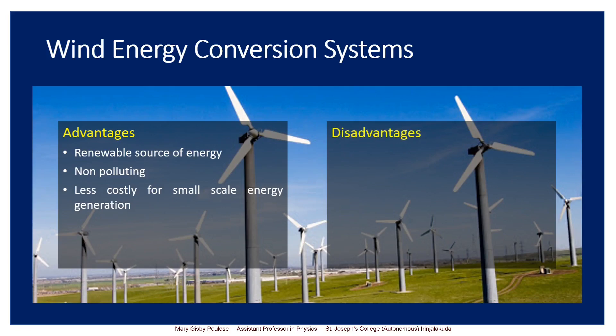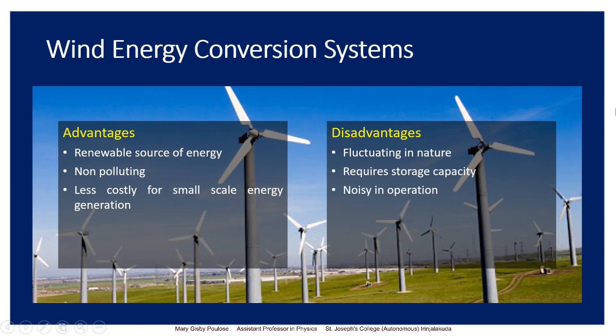The disadvantages are: wind energy is fluctuating in nature. Because of this fluctuating nature, it requires storage capacity — we need to store the electricity generated in order to keep a stable and continuous supply.